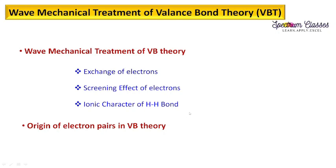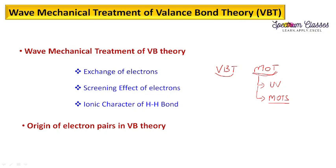You may have a question here: why are we discussing the wave mechanical treatment of valence bond theory? The reason is that in bonding theory we have two major theories — VBT and MOT. To explain concepts in UV-visible spectroscopy and molecular orbital term symbols, I need to cover linear combination of atomic orbitals in MOT. Understanding VBT first will help us understand molecular orbital theory, which comes up when discussing sigma and pi bonds in complexes and many more things.